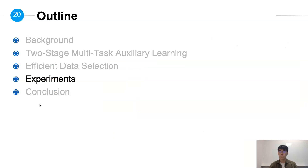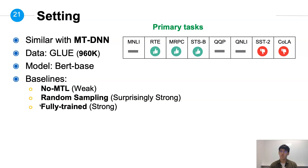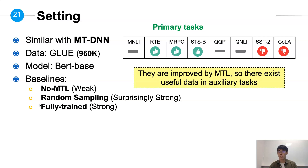Now we are going to talk about our experiments. We conduct the experiment with a setting similar to MTDN. The dataset is the GLUE benchmark and the model is BERT-BASE. The first baseline is no MTL, which is single task fine-tuning. The second baseline is random sampling, which simply randomly samples data from auxiliary data — this is a surprisingly strong baseline. The third baseline is fully trained, which performs multitask auxiliary learning on all auxiliary data. This is a strong baseline and assumed upper bound, but is inefficient. We only evaluate performance on RTE, MRPC, and STSB, since they are improved by MTL.